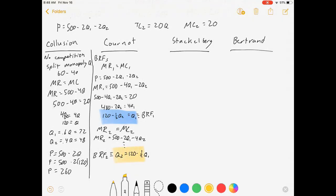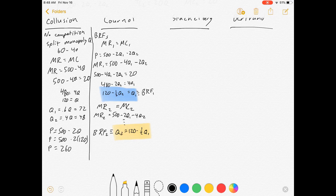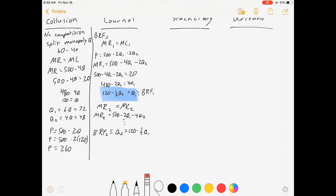We've got these two best response functions. Now to get our equilibrium, we're looking for a point where they both choose quantity and price so that neither has any incentive to deviate. That's only going to happen where these best responses line up with each other. So I'm going to substitute Q1 into Q2 and vice versa. Let's do Q1 first: Q1 equals 120 minus one half of Q2.